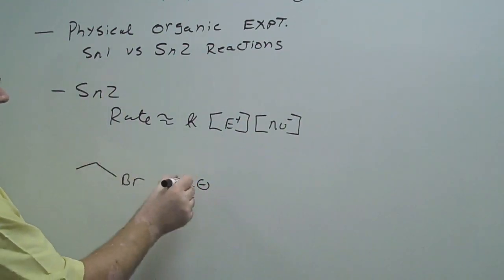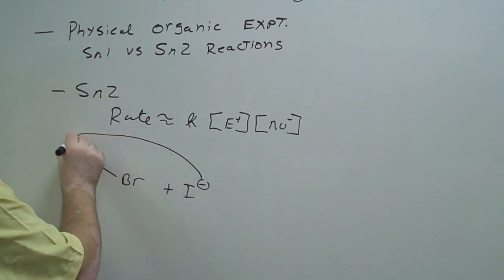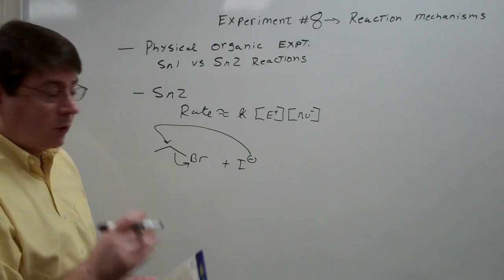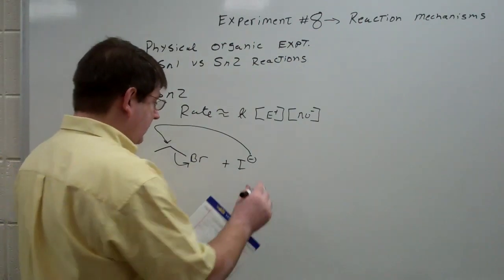And so in an SN2 reaction, of course, the nucleophile attacks from the back and kicks out, if you will, the bromide as a leaving group. So bromide, in this case, functions as a leaving group.